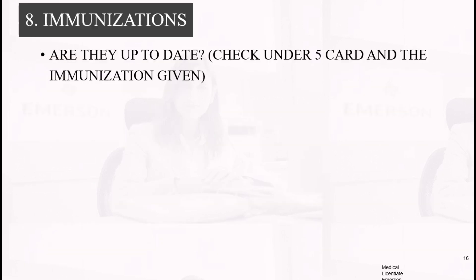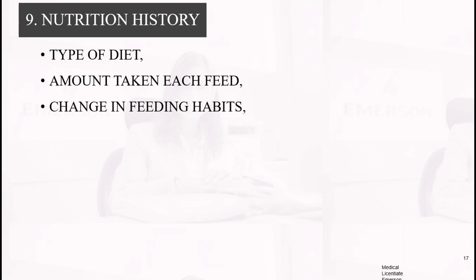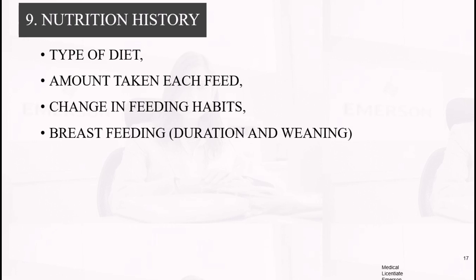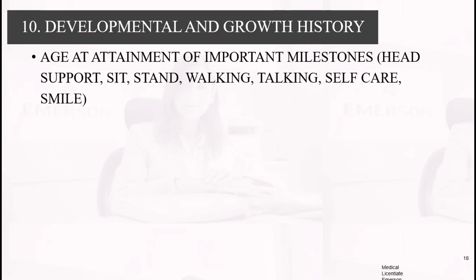I is for Immunization. Check the under-five card to see if all immunizations have been given at the appropriate ages rather than just asking if the child has had them. N is for Nutrition. Ask about the type of diet given, the amount taken, and whether there have been any changes in feeding habits. For breastfeeding, ask the duration, and if the child is no longer breastfed, ask about the age of weaning.